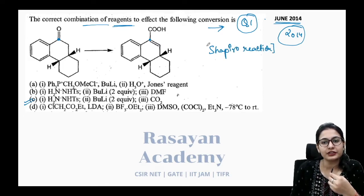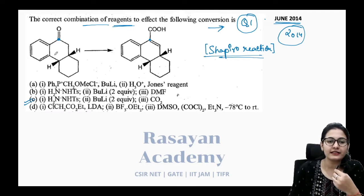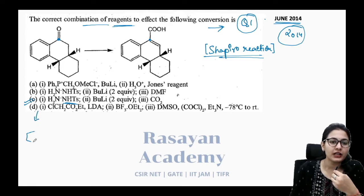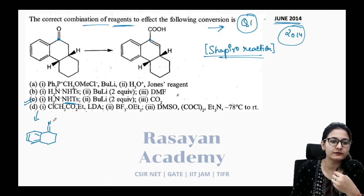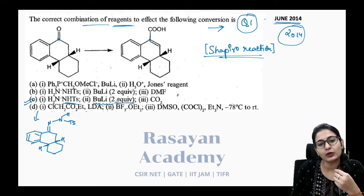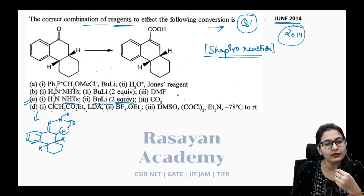This is a very important reaction that has been asked multiple times in previous years. First, tosyl hydrazine reacts with the molecule to form a tosyl hydrazone. The rest of the molecule remains unchanged. In the presence of a base — n-butyl lithium, two equivalents — there are only two positions where the proton can be removed: the NH proton is more acidic.